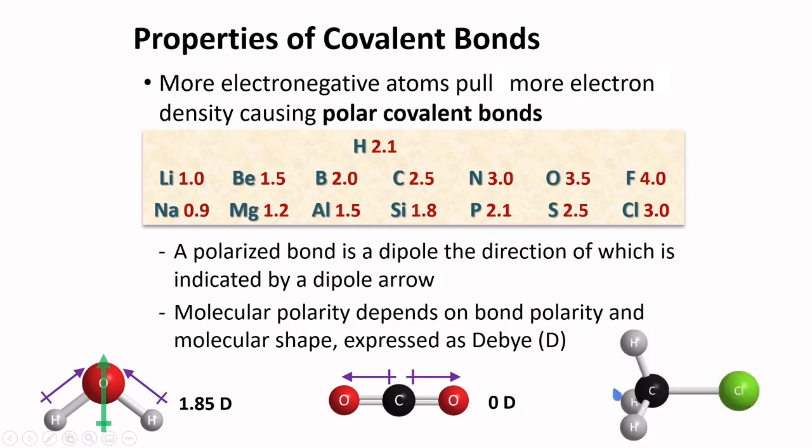For this compound, methyl chloride, chlorine is more electronegative than carbon. And so there will be a net imbalance of electron density moving towards chlorine. It has a dipole moment of 1.87 Debye.